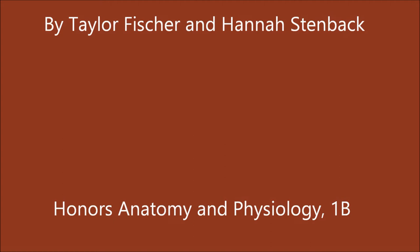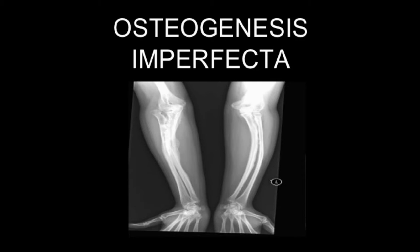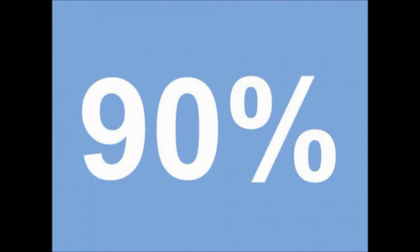Osteogenesis Imperfecta, by Taylor Fisher and Hannah Stenbach. Osteogenesis Imperfecta, otherwise known as brittle bone disease, is a genetic disorder that is characterized by fragile bones that break easily. It affects the skeletal system and is classified into eight main types.